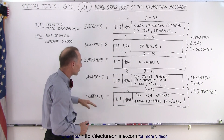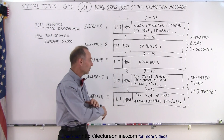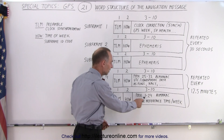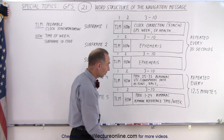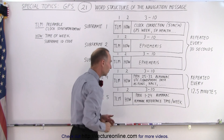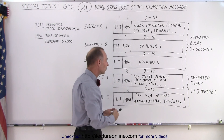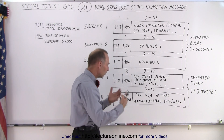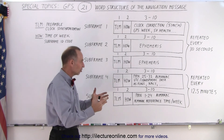Sub-frame four and sub-frame five contain the same data that every satellite transmits — it's for the entire constellation. Notice that for sub-frame five, we have orbital information for PRNs one through 24, essentially the first 24 satellites. Sub-frame four has the PRN information from satellites 25 to 32. It also has UTC and ionospheric data, AS flags, a navigation message correction table, and other things needed in order to figure out where the satellites are, at least for the first acquisition attempt.